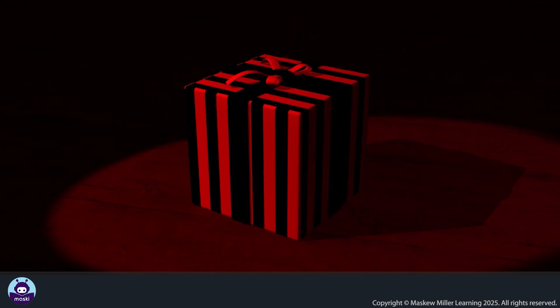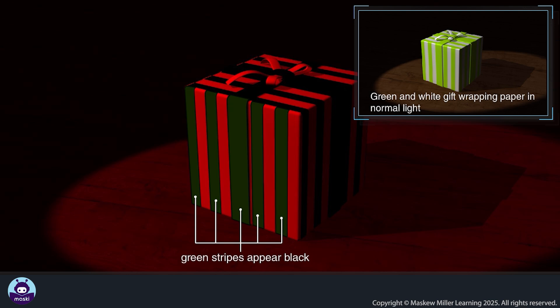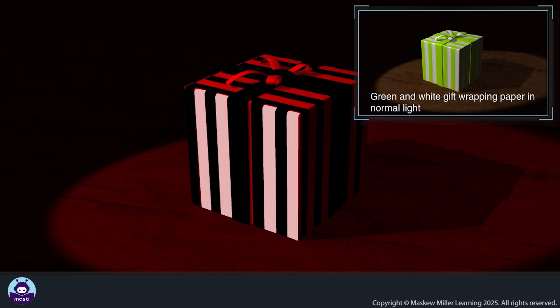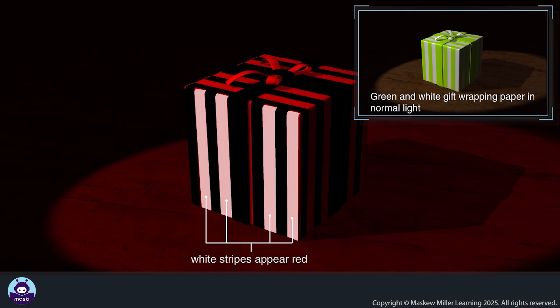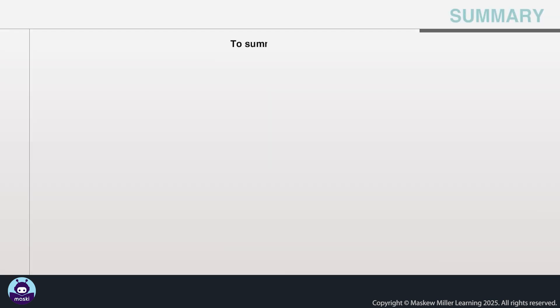The green stripes absorb the red light, so we see them as black. There is only red light available, so we see the white stripes as red. Let's summarize what we have learned.